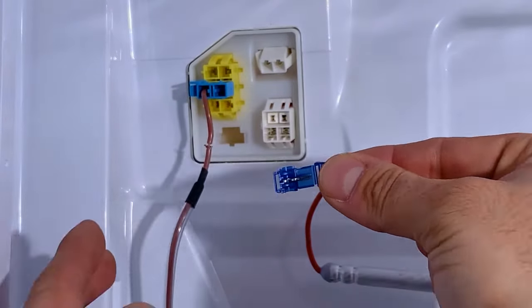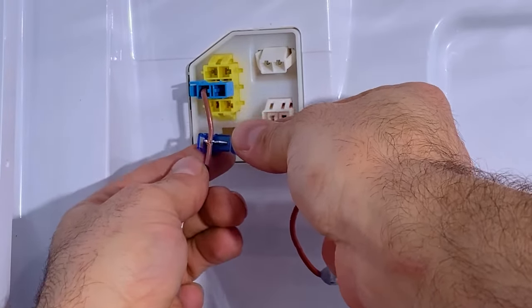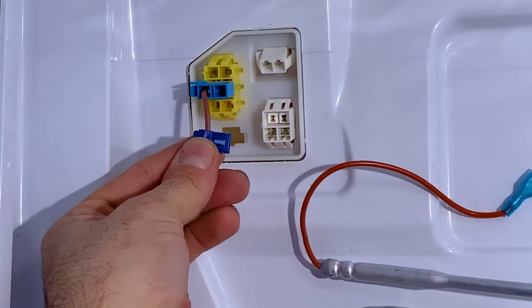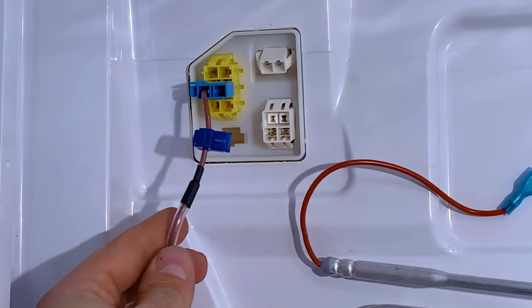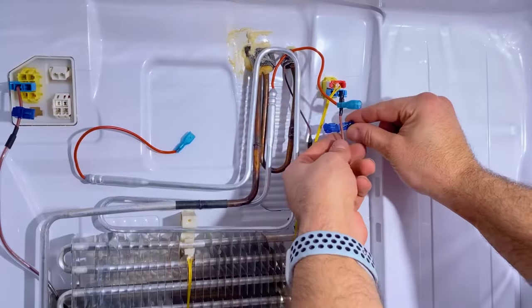We'll have a picture of that for you to show you exactly what they look like and how to use them. Basically, you're going to crimp it onto the existing wire on the left-hand side to the defrost heater.